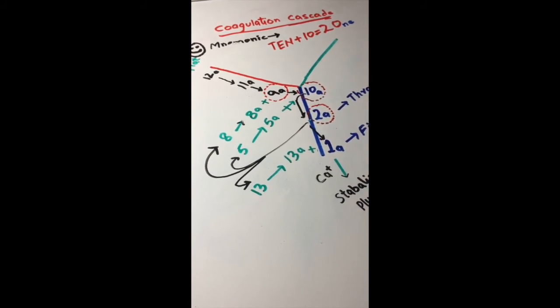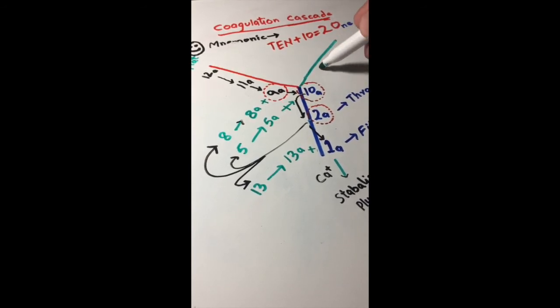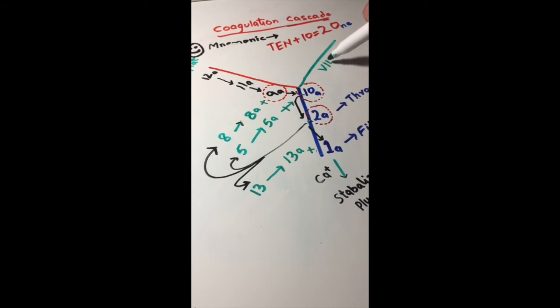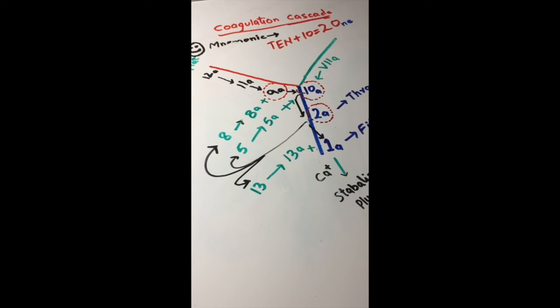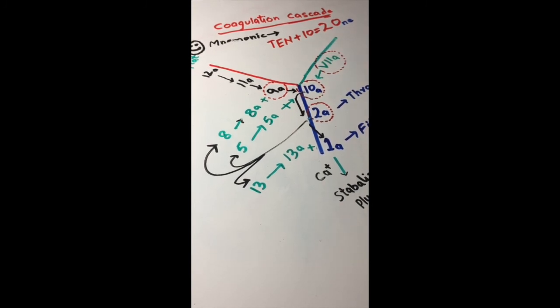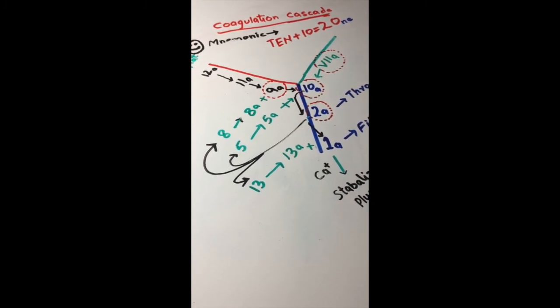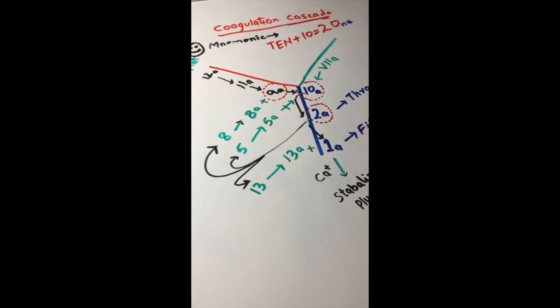This was our intrinsic pathway. The extrinsic pathway has only one factor: factor 7. It gets converted into 7a and then goes to 10 and converts 10 into 10a. It also needs calcium. So pretty much everything around 10—right, left, or bottom—they all need calcium.